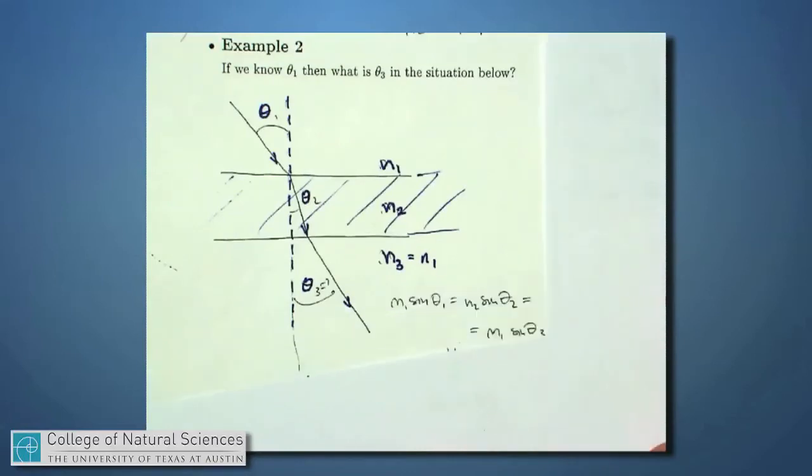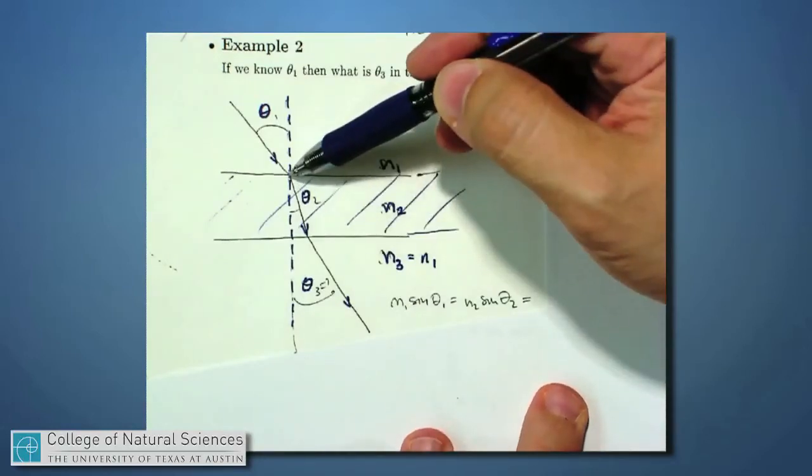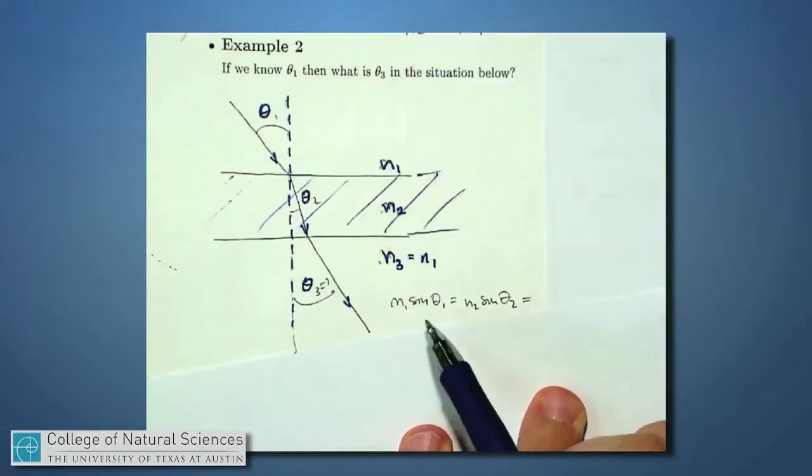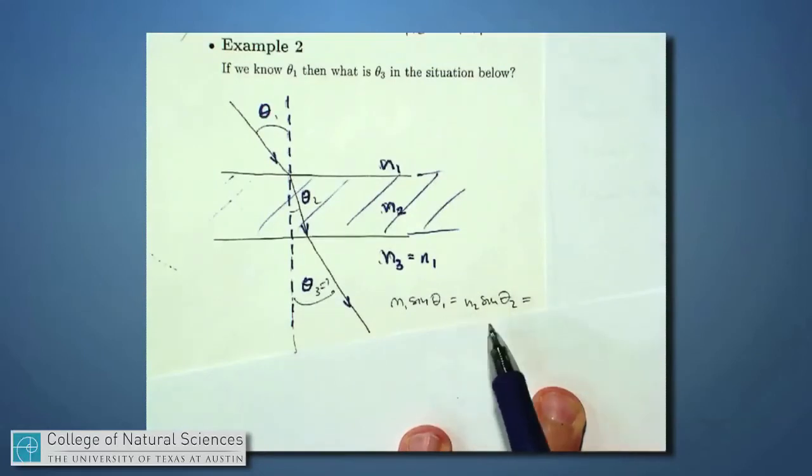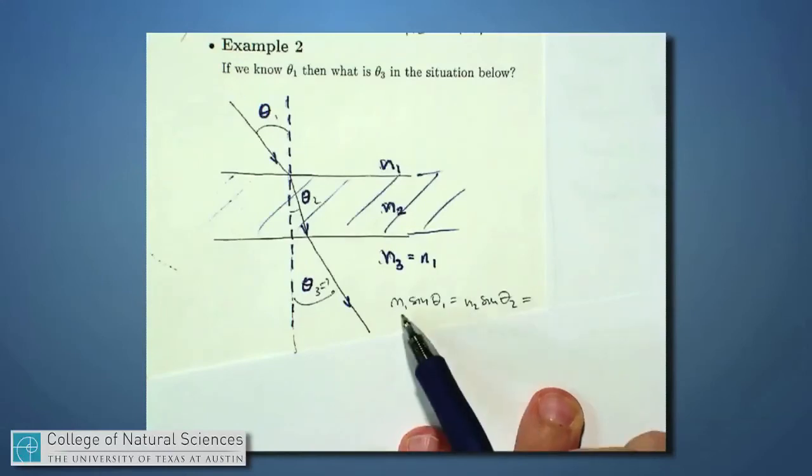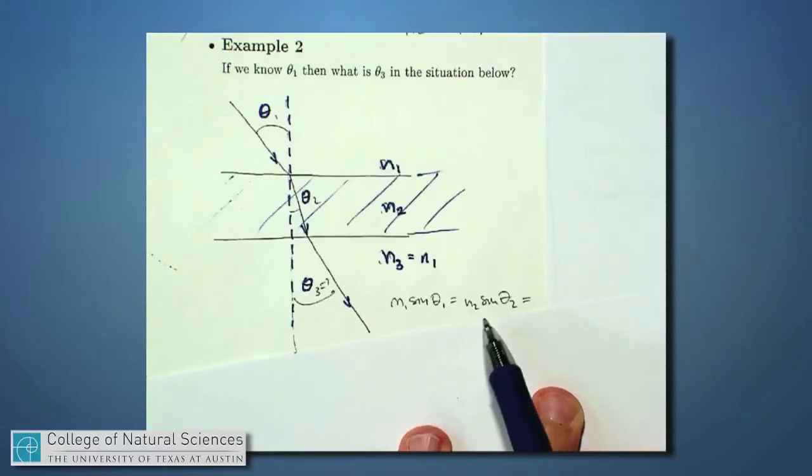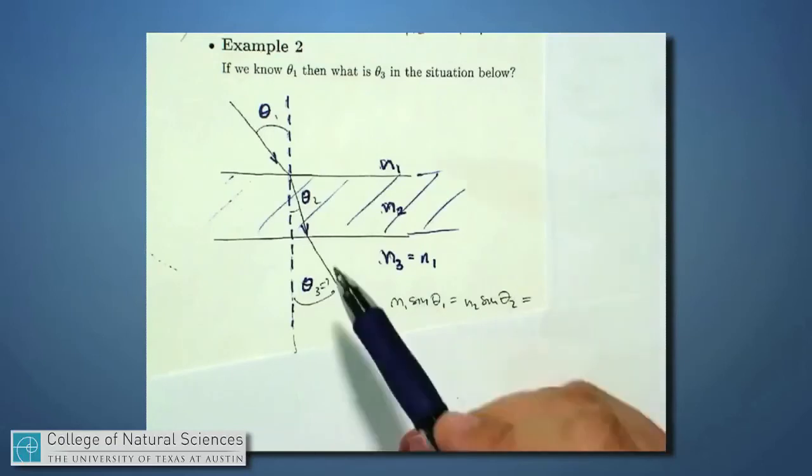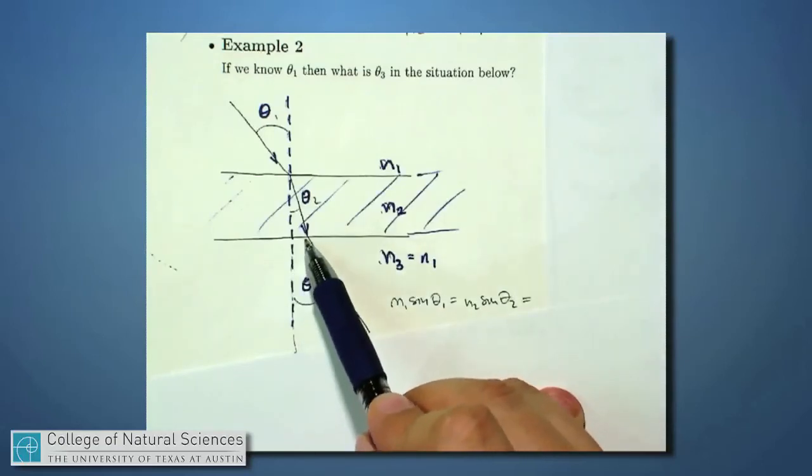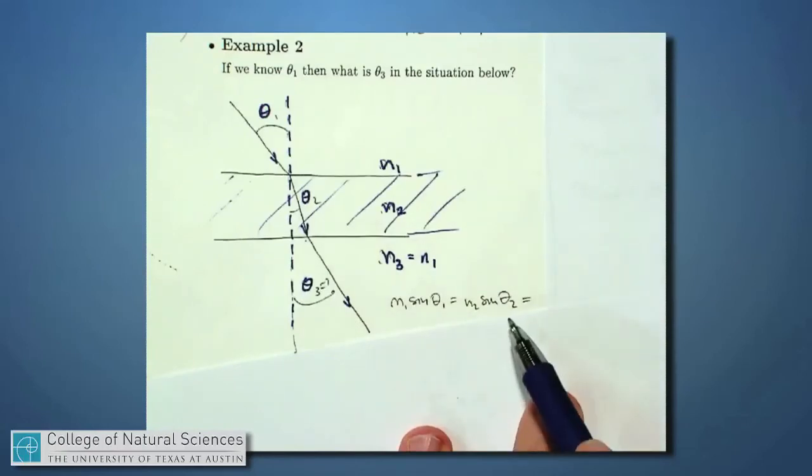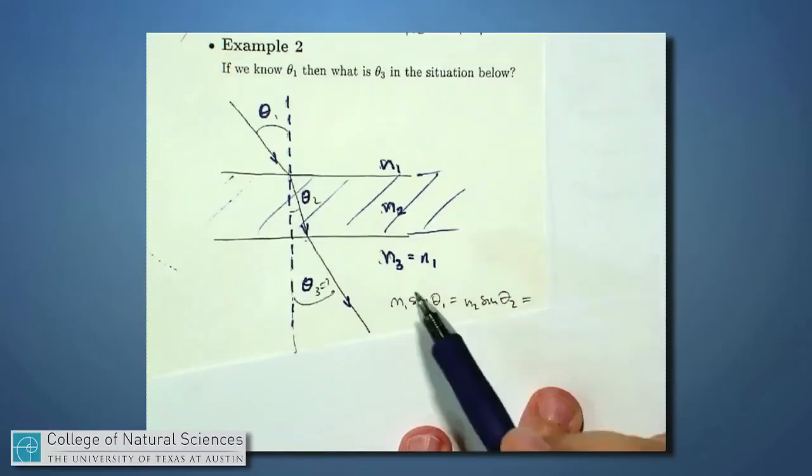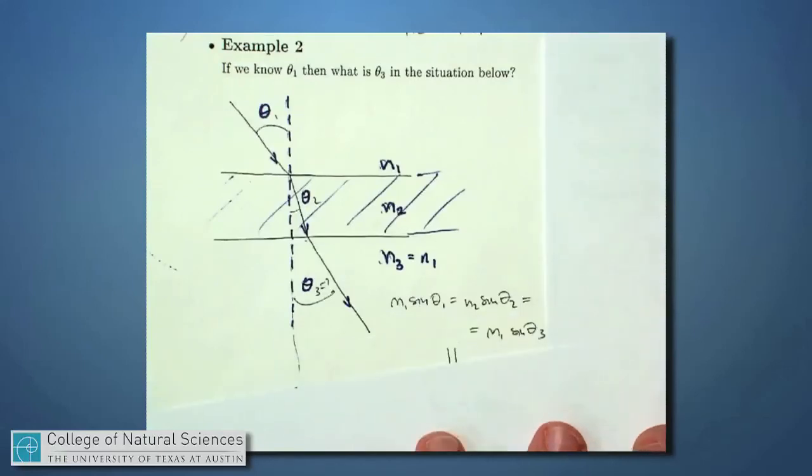This is again a straight up application of Snell's law. I apply Snell's law at this boundary and I say, well, N1 times sine of theta1 has to equal N2 times sine of theta2. And I still don't know what theta2 is, but if I knew what N1 and N2 are, I would be able to get it. At the same time, I can also apply Snell's law at the second boundary, right there. And I would also know that N2 times sine of theta2 has to equal N3 times sine of theta3.